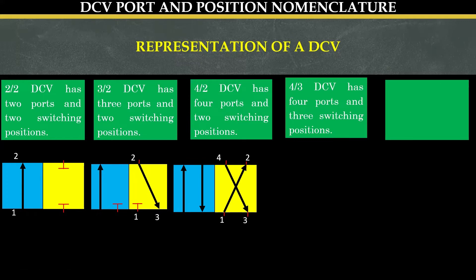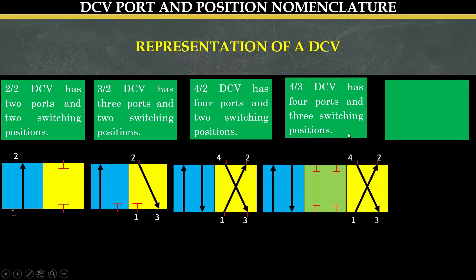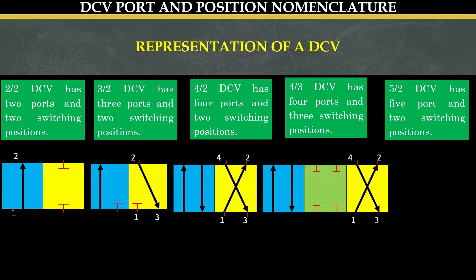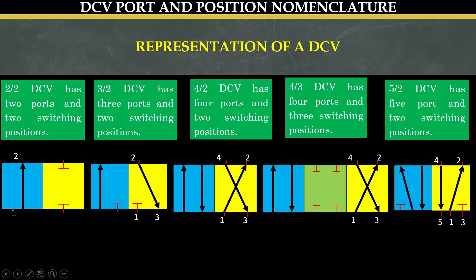A four by three direction control valve has four ports — one, two, three, and four — in each square and three switching positions. And finally, a five by two direction control valve will have five ports — one, two, three, four, and five — and two switching positions.